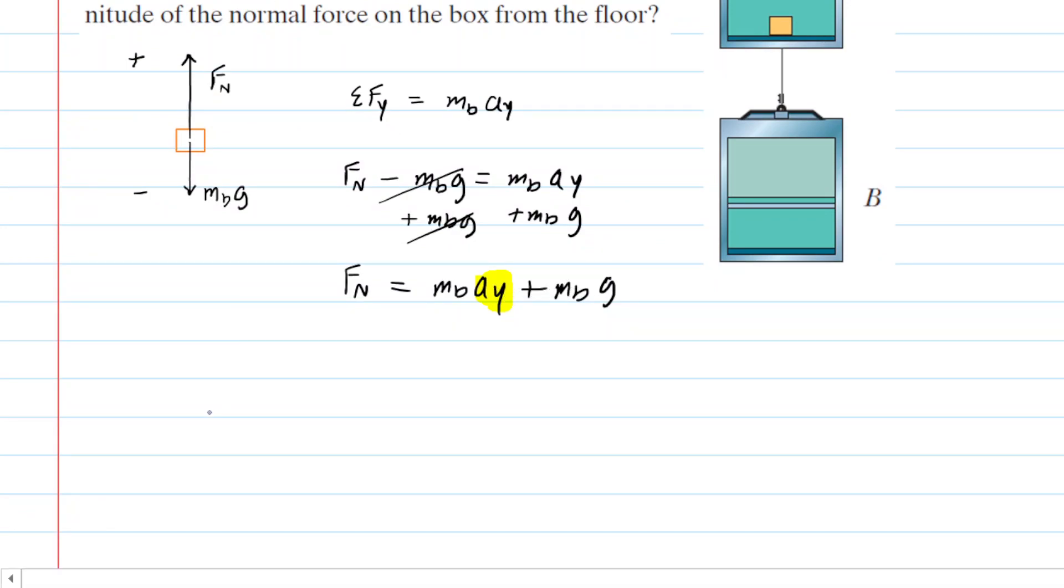Now looking at cab B, which we might represent as just a point particle, we of course once again have the force due to gravity. So we would have the mass, and we'll call this capital B so we don't confuse it with the little b above, mass of the cab B times g.